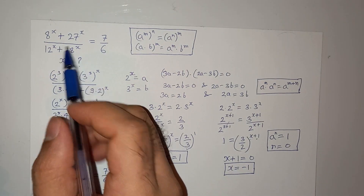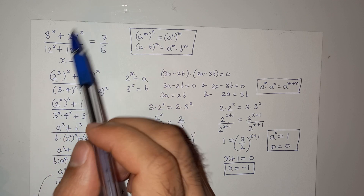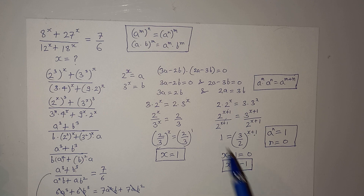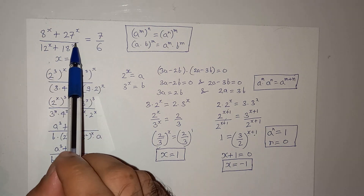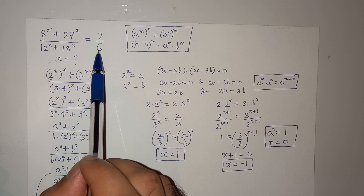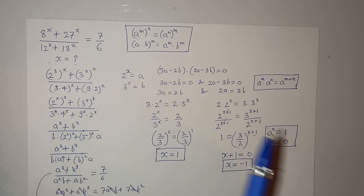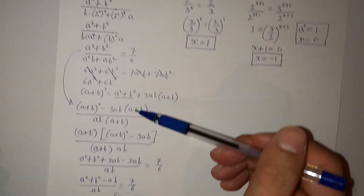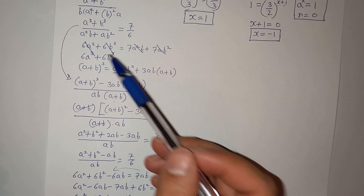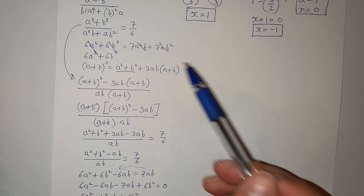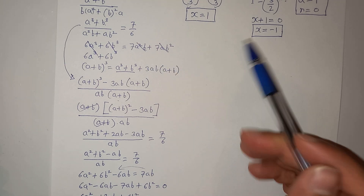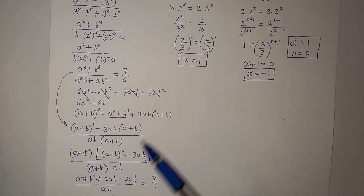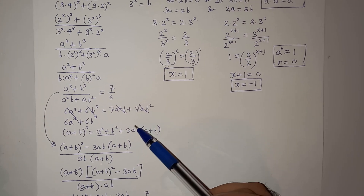So we have two solutions: x = 1 and x = -1. I want you to put these values back into the original equation and check if you get 7/6. I hope the solution is clear — I'm sorry for the mistakes I made along the way. Thank you for watching, and I'll see you in the next video!